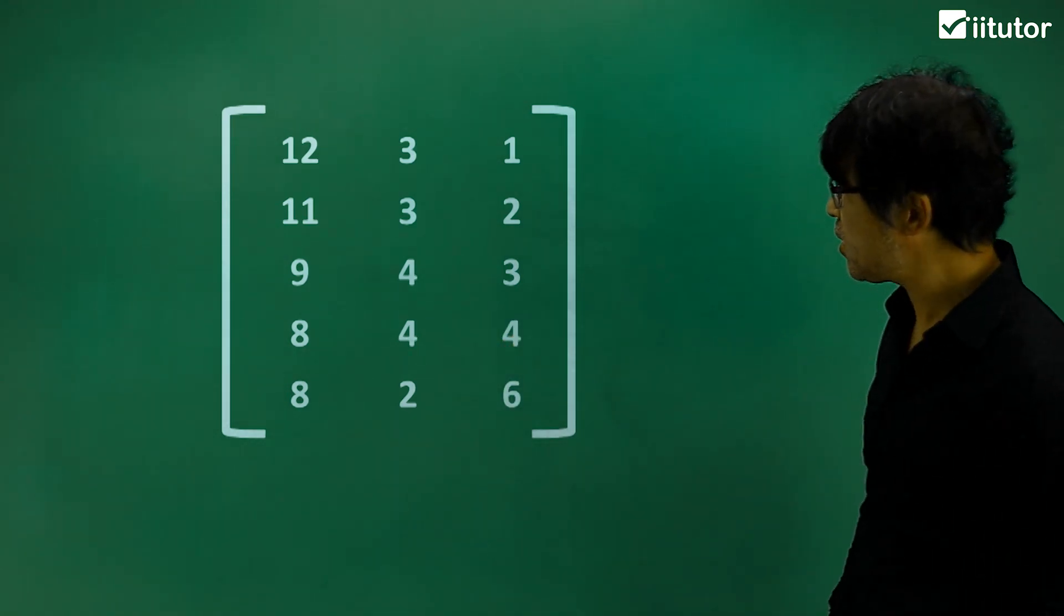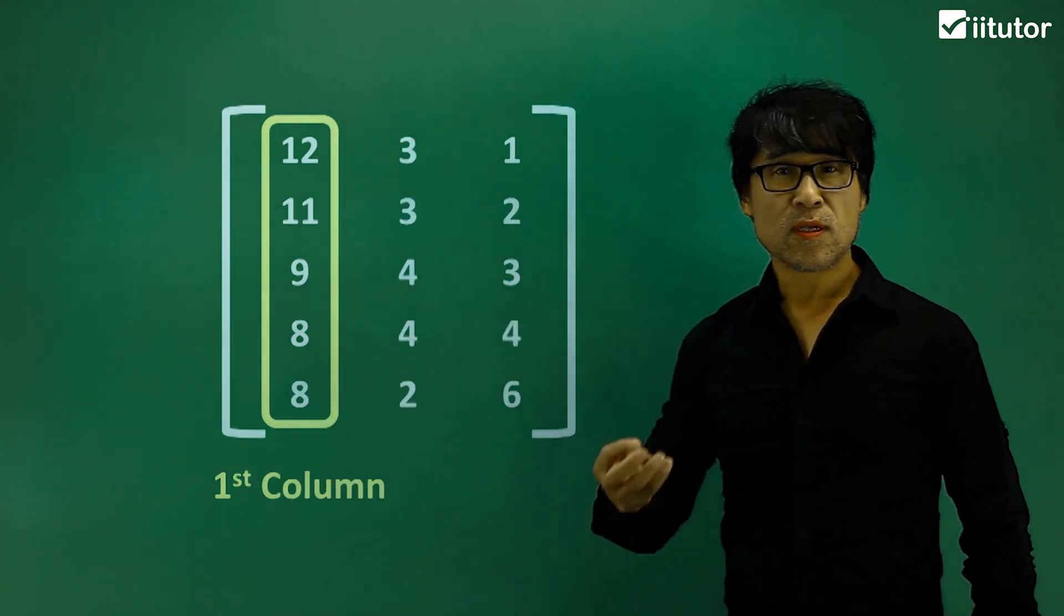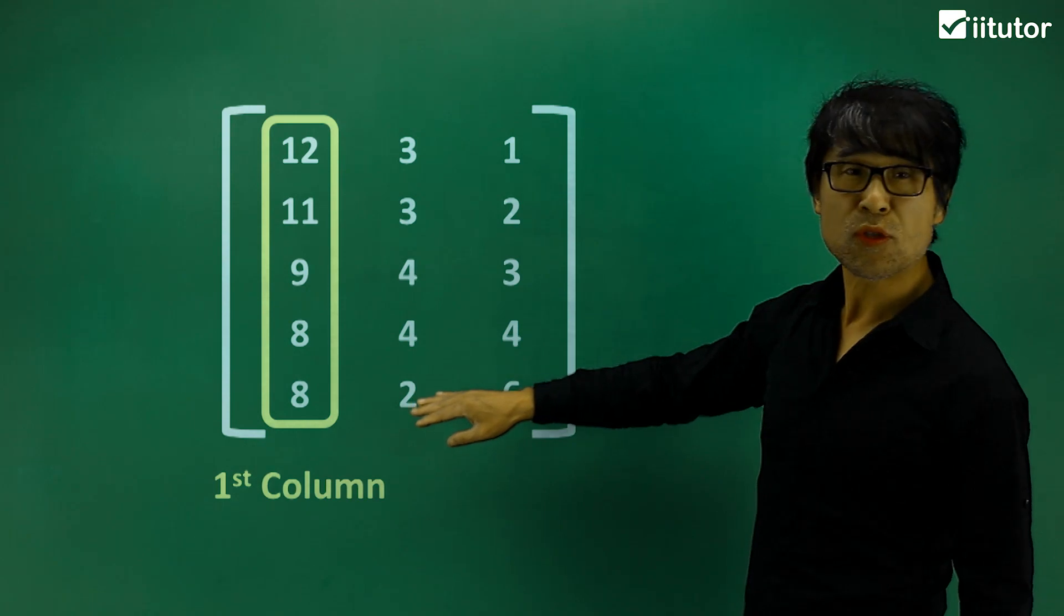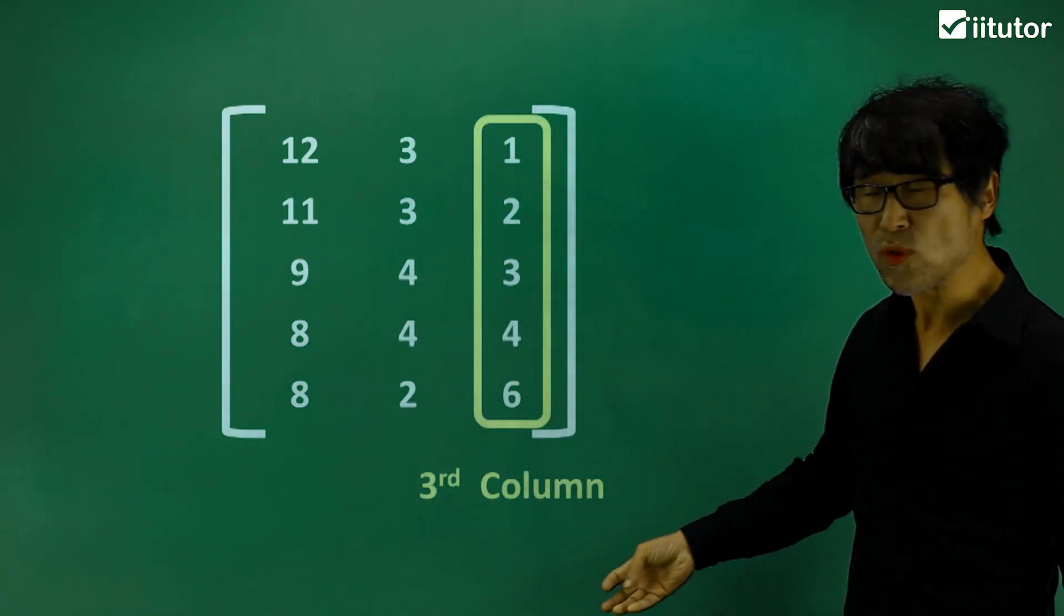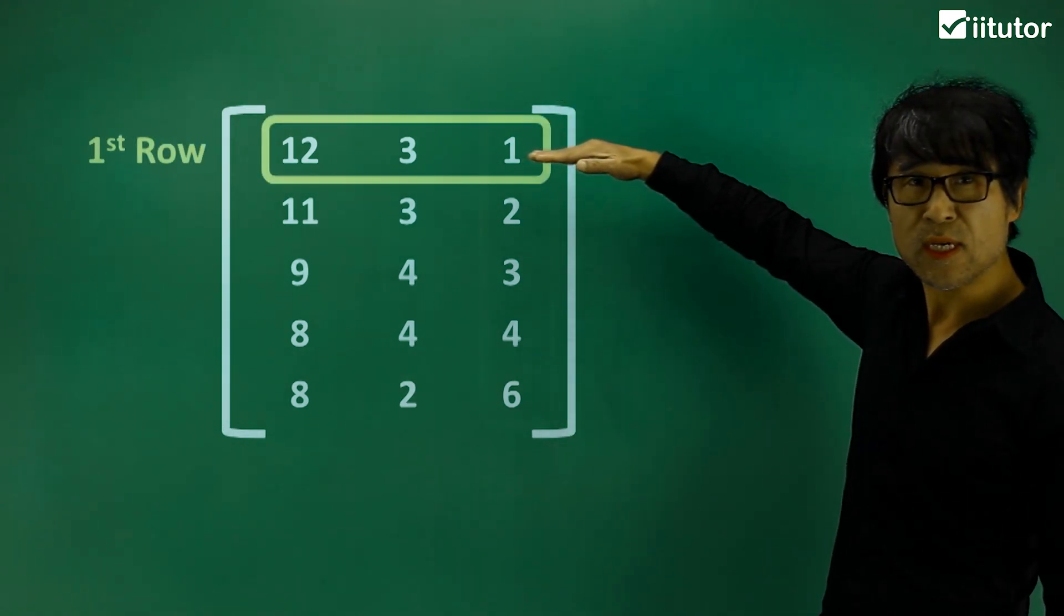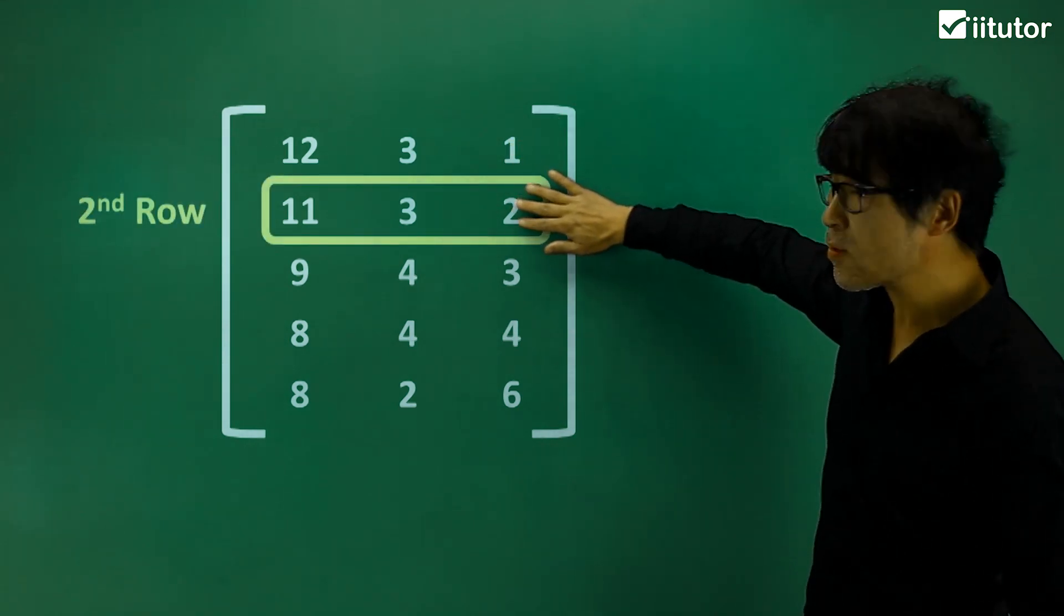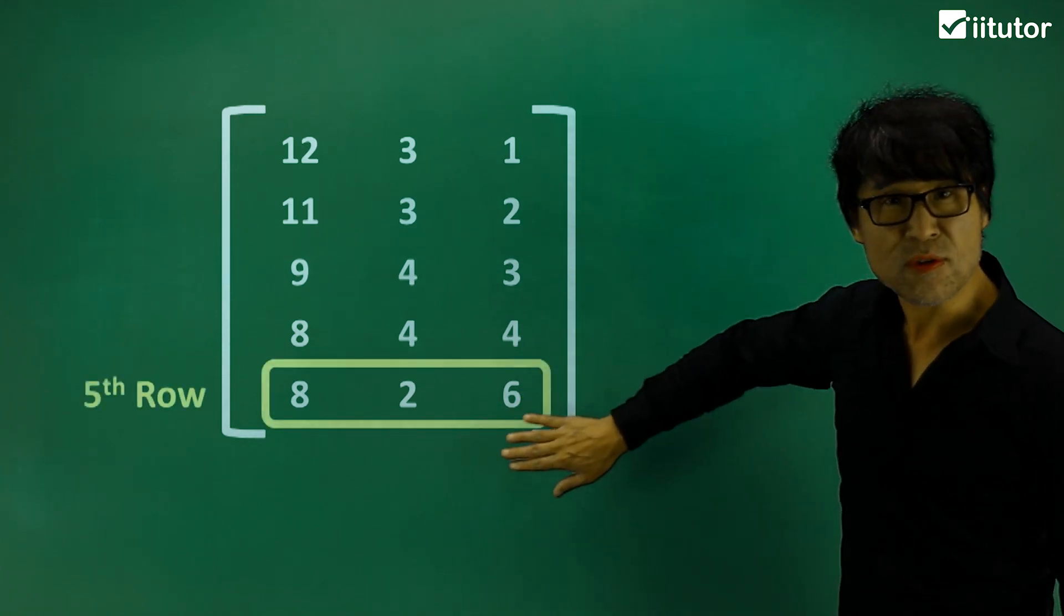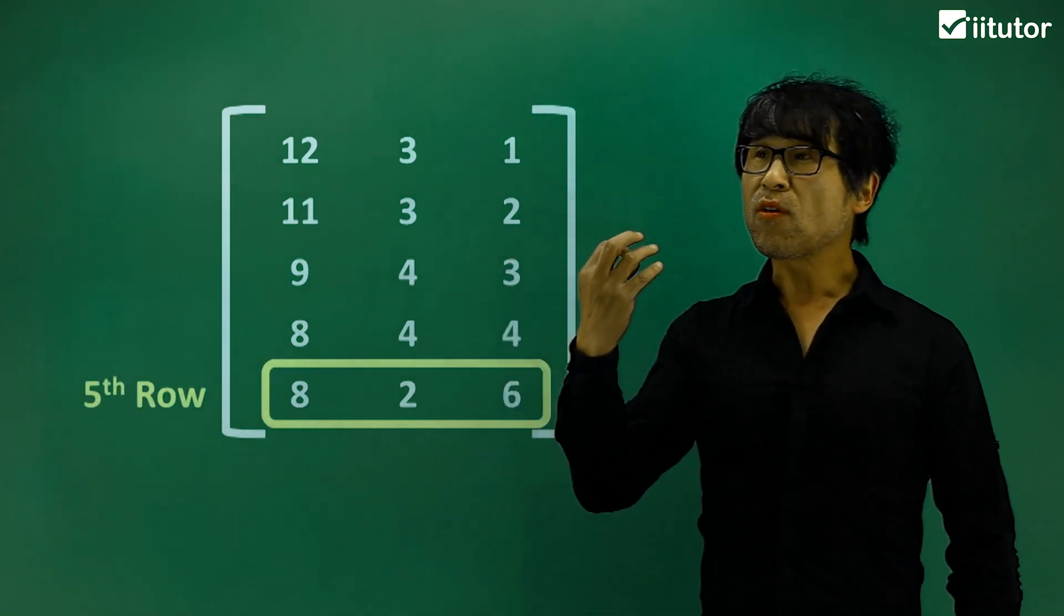Now we'll see what's happening here. In here, this is called the first column. So what do you want to call the second one? Second column, third column, no doubt about that. What about horizontal data? So first row, second row, third row, fourth row, and fifth row. So in here we have a kind of order.